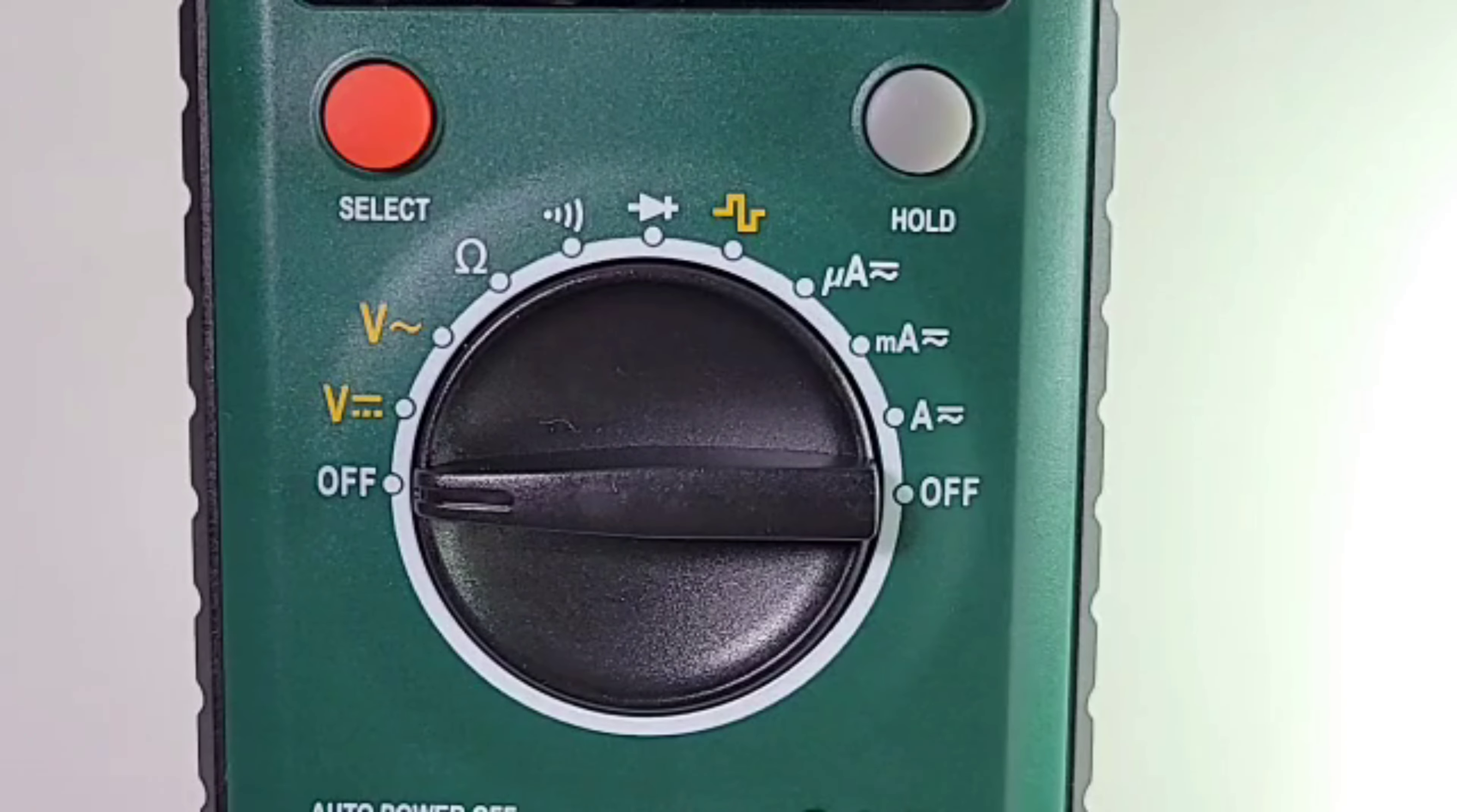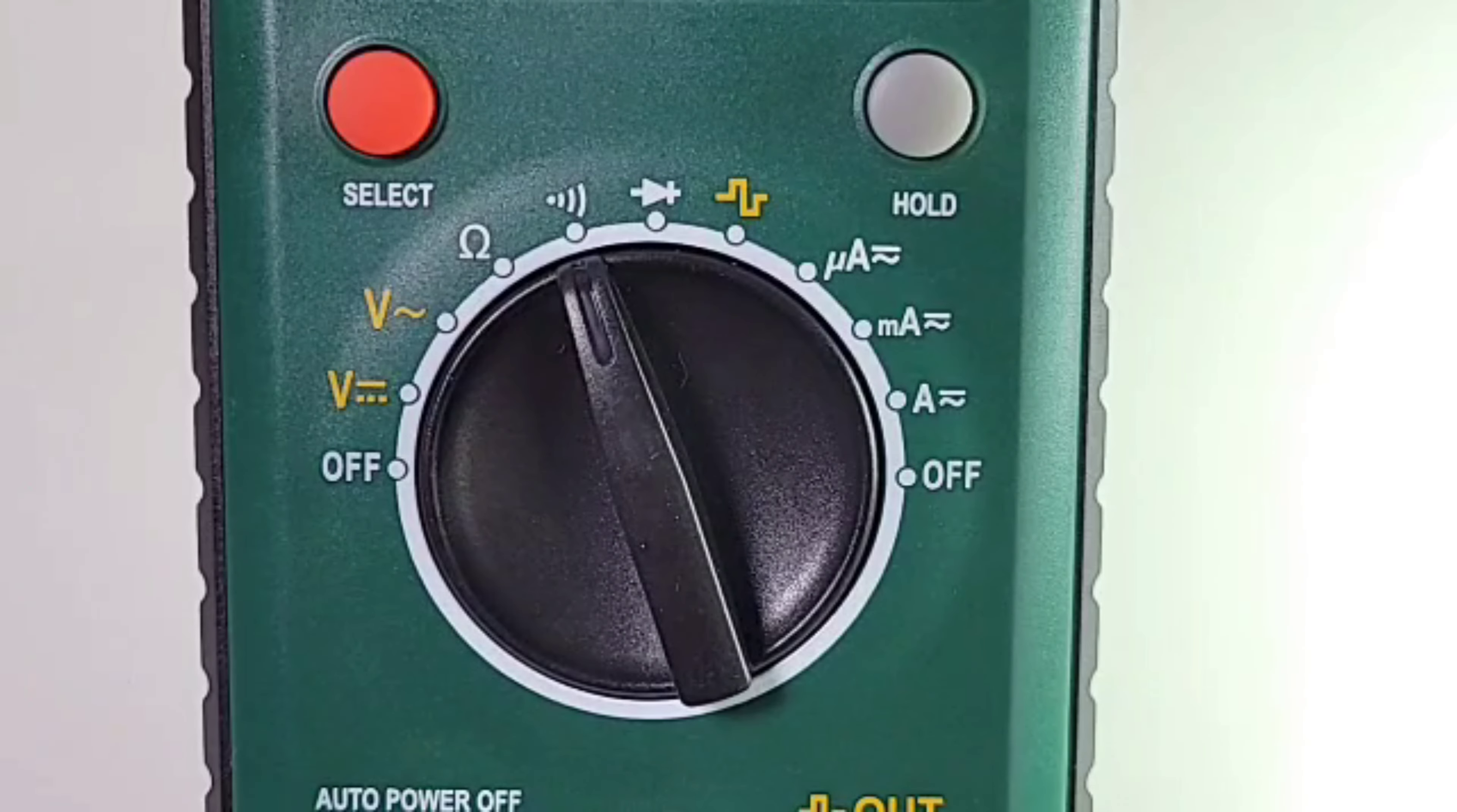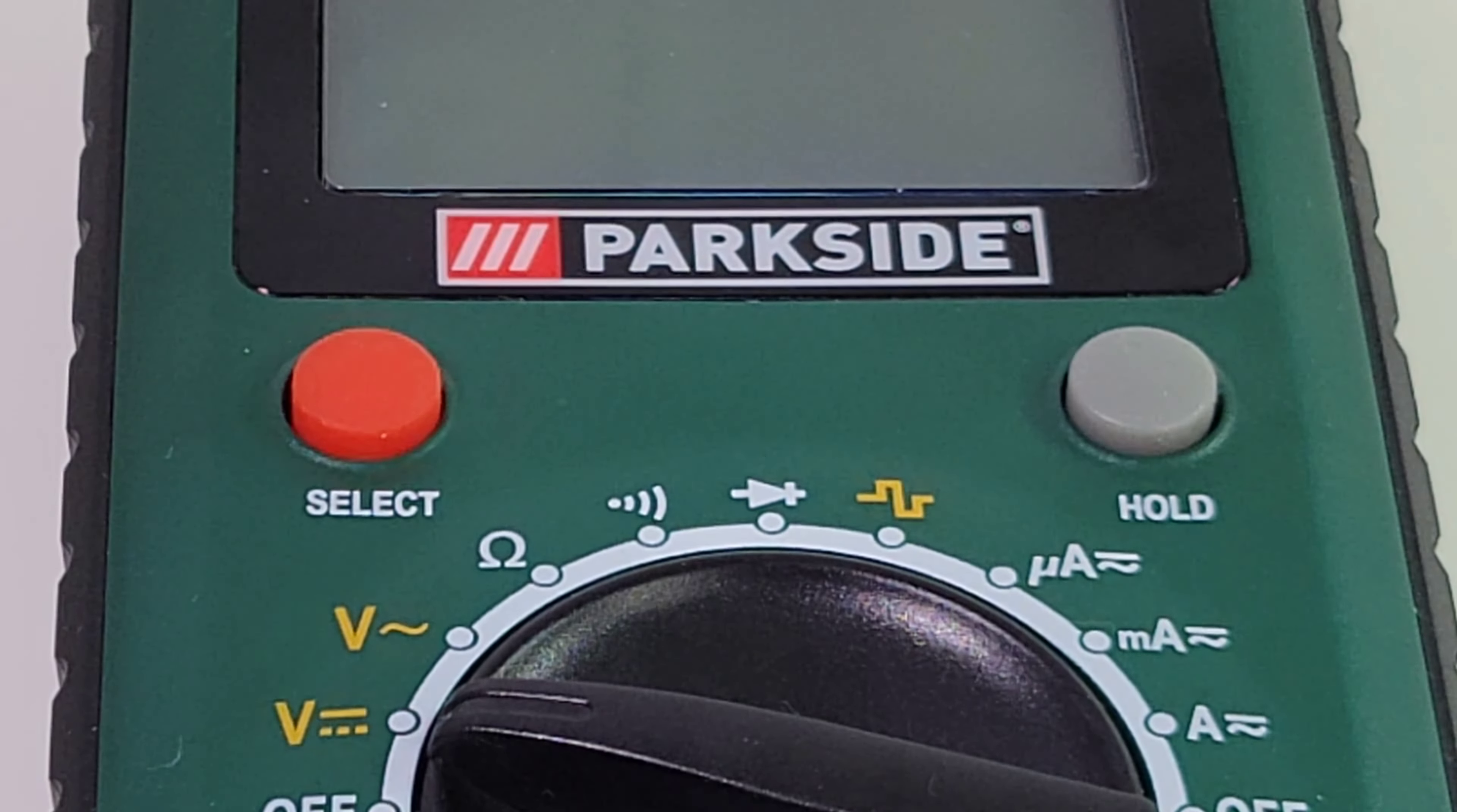Closer look at that selector switch starting at the 9 o'clock off position followed by volts DC, AC volts up to 300 volts, resistance up to 20 megaohm, continuity, diode, function generator, microamps AC/DC, milliamps AC/DC, finally high current amps up to 10 amps AC/DC, and your secondary off position at the top.